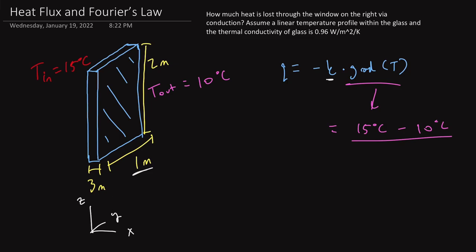So we've got 3 millimeters of glass, which is really equal to 0.003 meters. And so what we end up finding here is that our gradient of temperature in this example is equal to 333 Kelvin per meter.